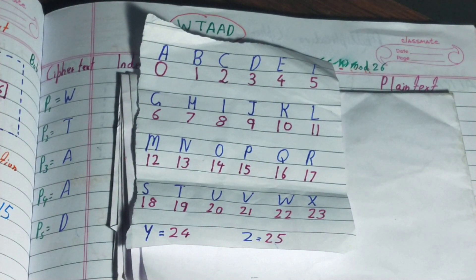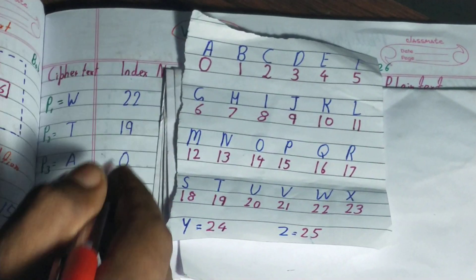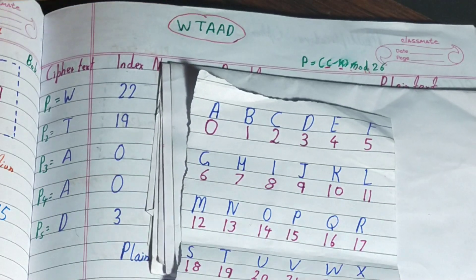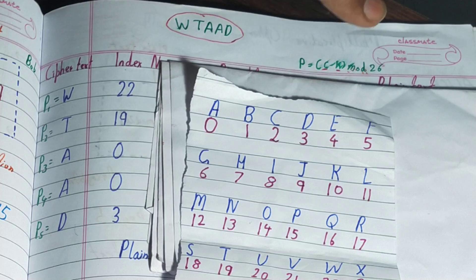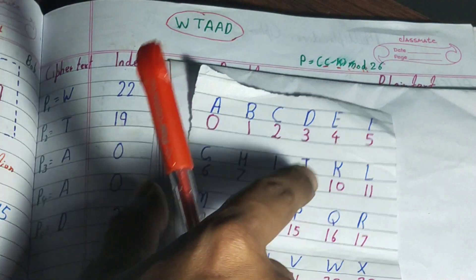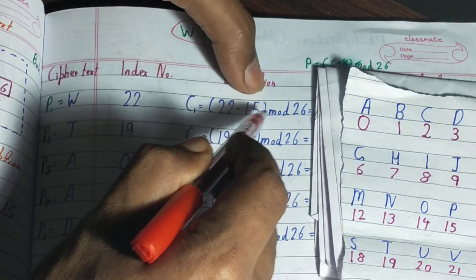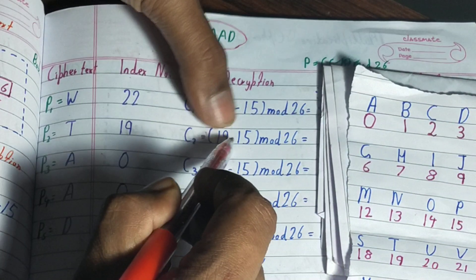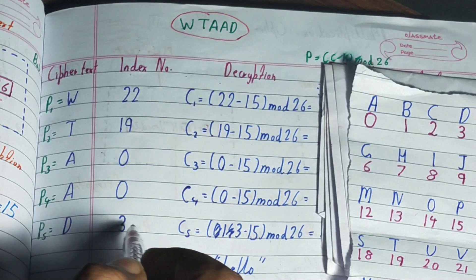Generally decryption is what gets asked in exams because it's a bit tougher than encryption. Using the formula P equals C minus k, mod 26, with key 15: we compute 22 minus 15 mod 26, then 19 minus 15 mod 26, then 0 minus 15 mod 26, then 0 minus 15 mod 26, and 3 minus 15 mod 26.